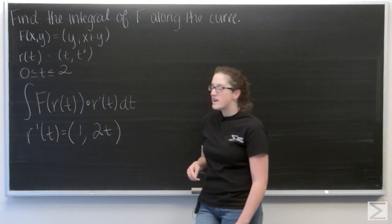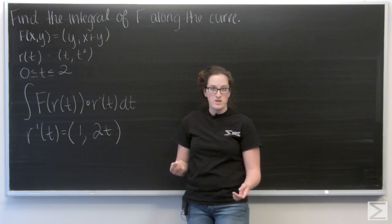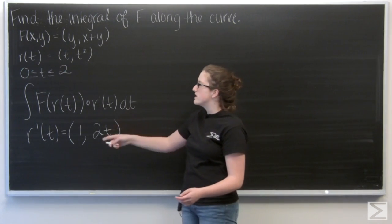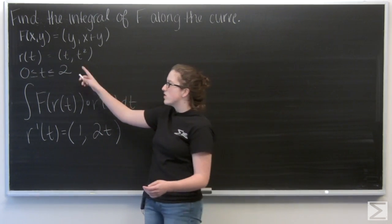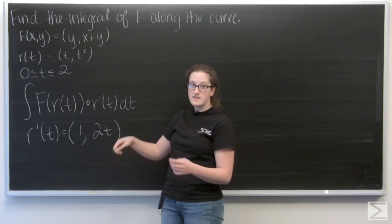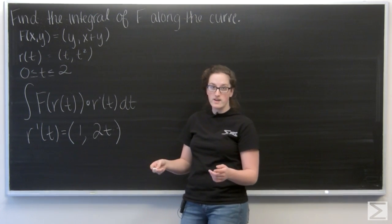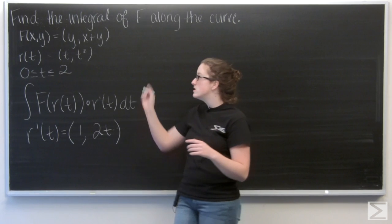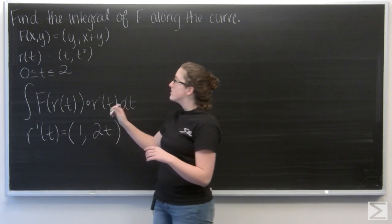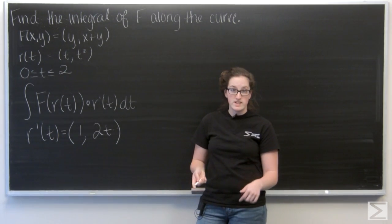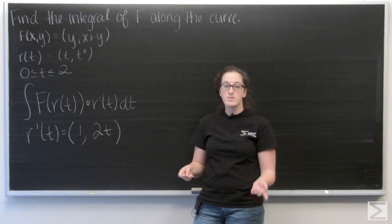Okay, now let's find f of r of t. So to do that, I'm going to treat the i component of r like x and the j component of r like y. I'm just going to plug those in to f. So everywhere I see an x, I'm going to plug in a t. And everywhere I see a y, I'm going to plug in a t squared.